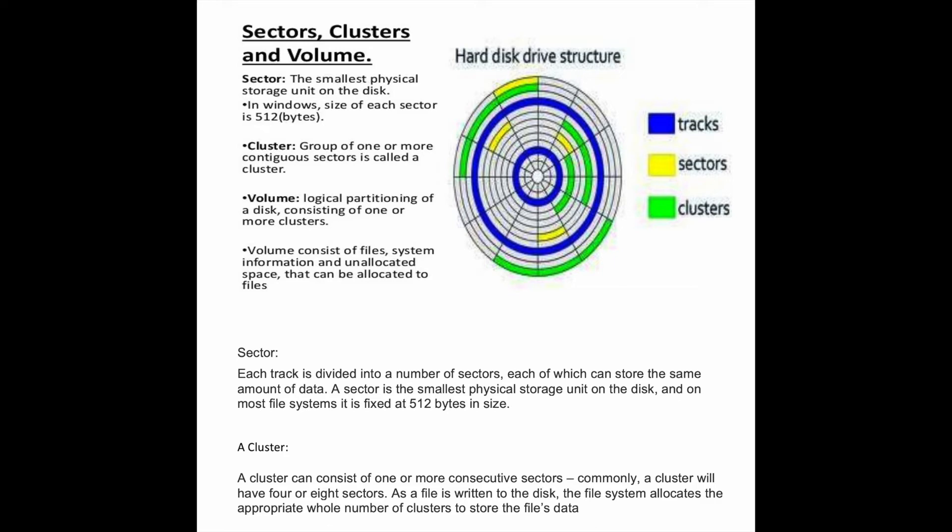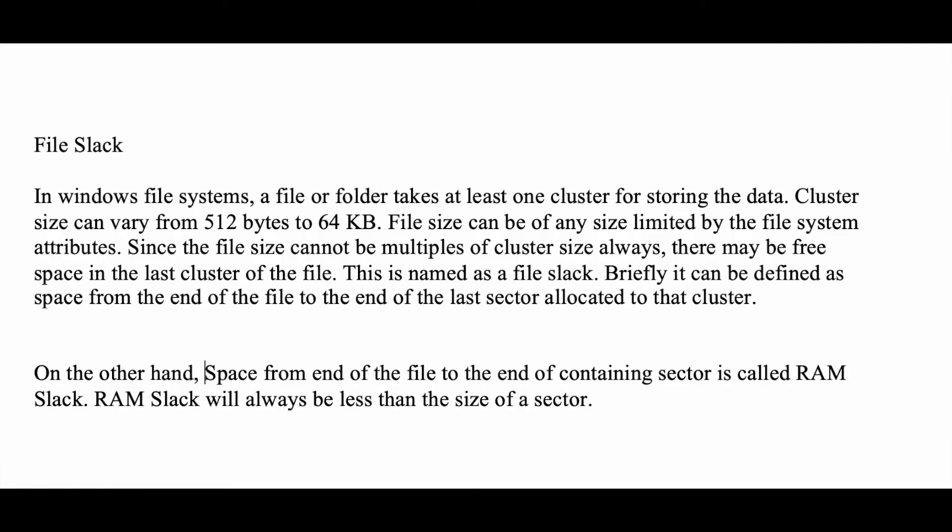And finally, what is file slack? In the Windows file system, a file or folder takes at least one cluster for storing the data. Cluster size can vary from 512 bytes to 64 kilobytes. File size can be of any size limited by the file system attributes. Since the file size cannot always be a multiple of the cluster size, there may be free space in the last cluster of the file. This is named file slack. Briefly, it can be defined as the space from the end of the file to the end of the last sector allocated to the cluster.